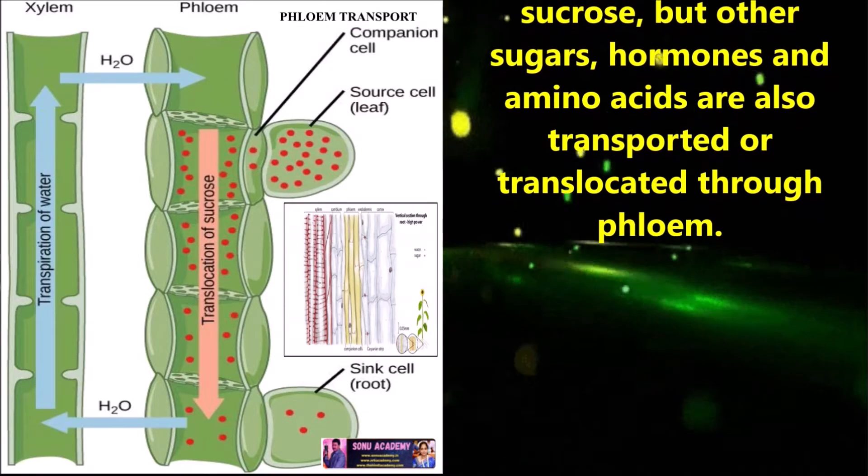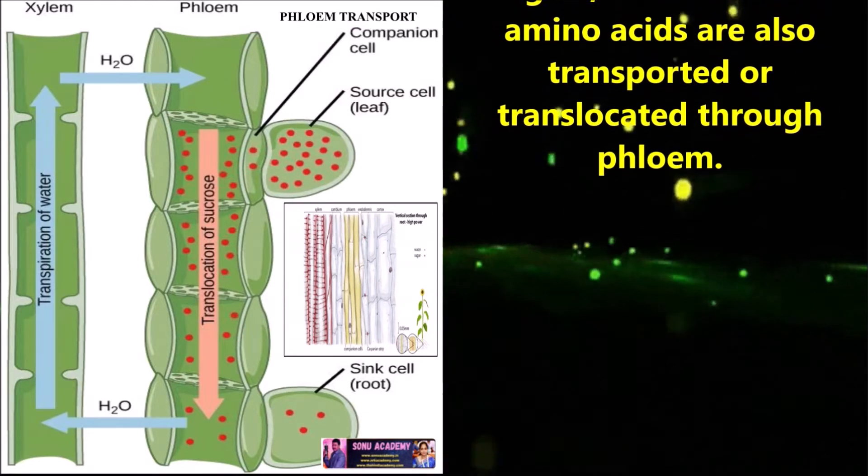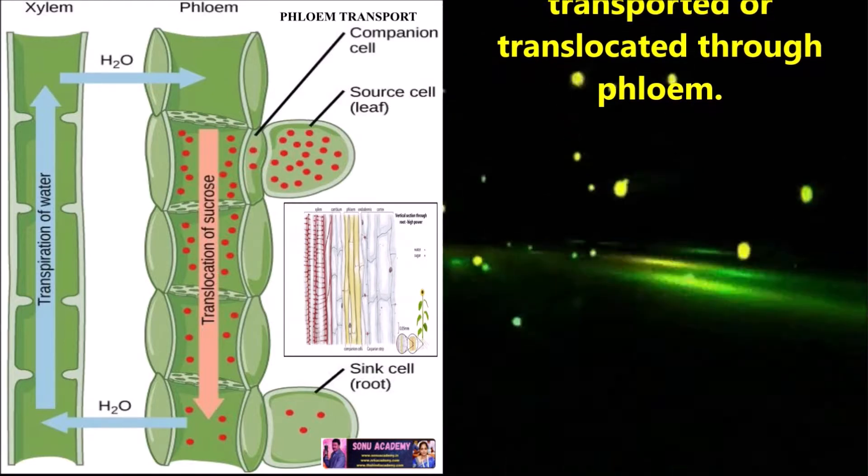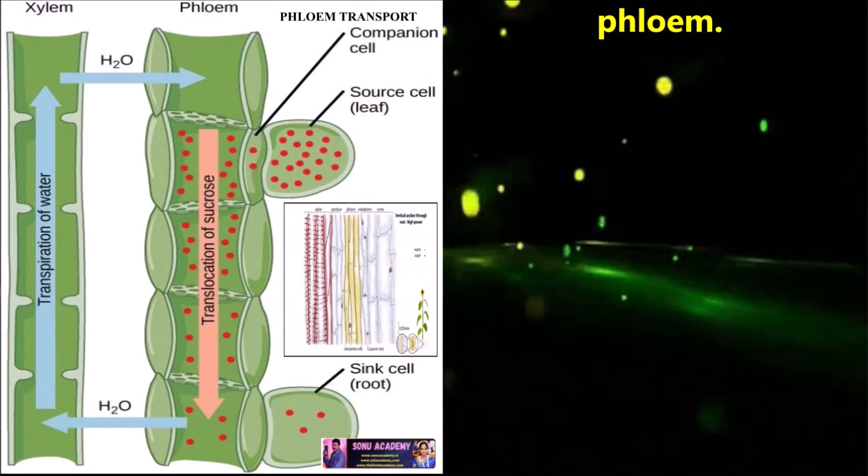Phloem sap is mainly water and sucrose, but other sugars, hormones and amino acids are also transported and translocated through phloem.